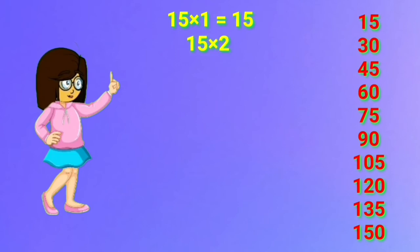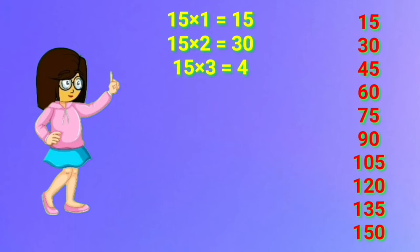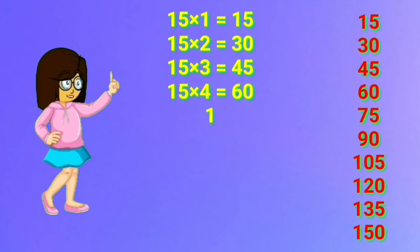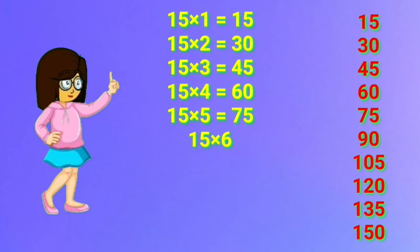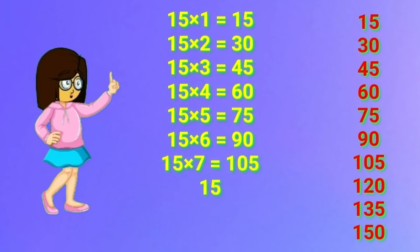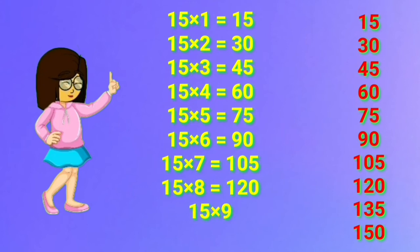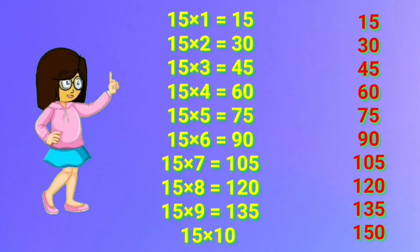15 one's are 15. 15 two's are 30. 15 three's are 45. 15 four's are 60. 15 five's are 75. 15 six's are 90. 15 seven's are 105. 15 eight's are 120. 15 nine's are 135. 15 ten's are 150.